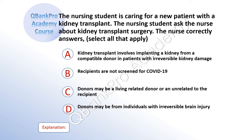The nursing student is caring for a new patient with kidney transplant. The nursing student asked the nurse about kidney transplant surgery. The nurse correctly answers. Select all that apply. A: Kidney transplant involves implanting a kidney from a compatible donor in patients with irreversible kidney damage. B: Recipients are not screened for COVID-19. C: Donors may be a living-related donor or unrelated to the recipient. D: Donors may be individuals with irreversible brain injury.